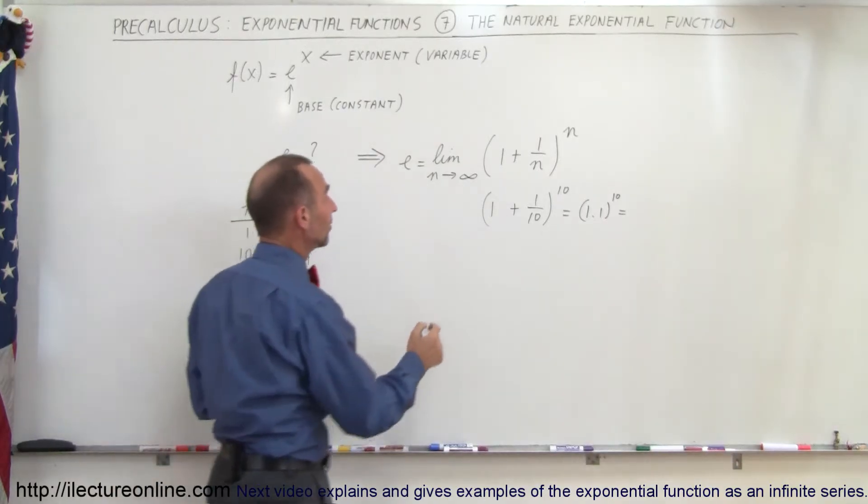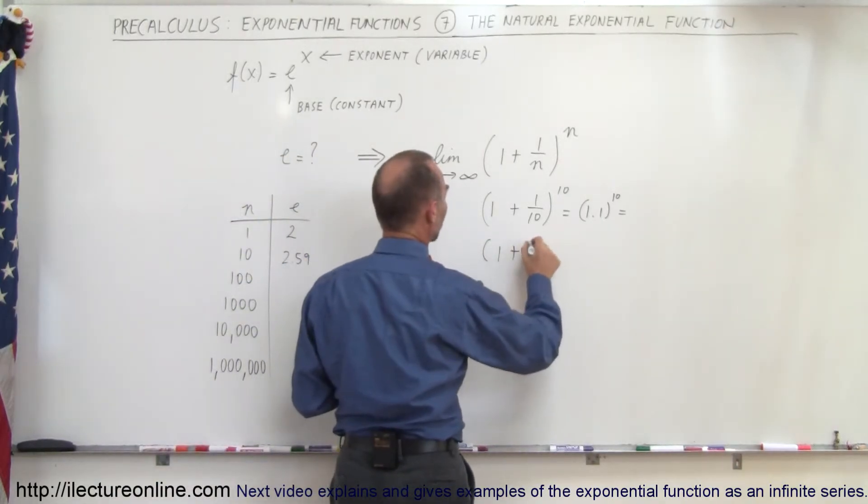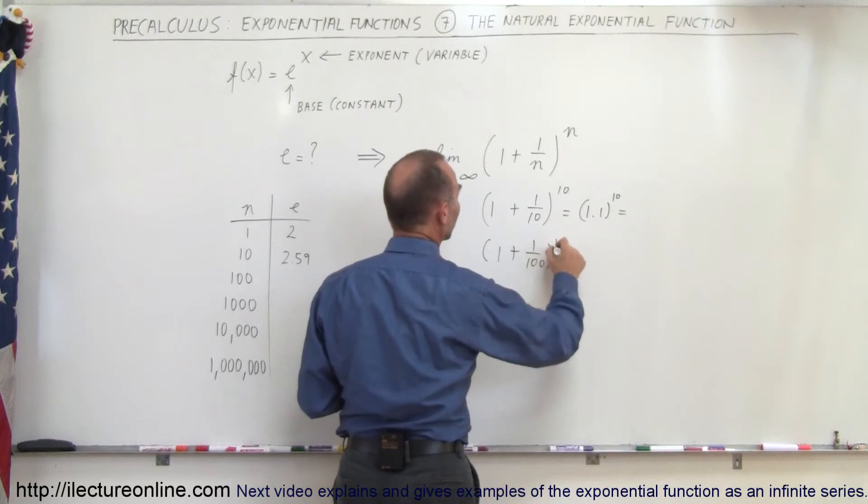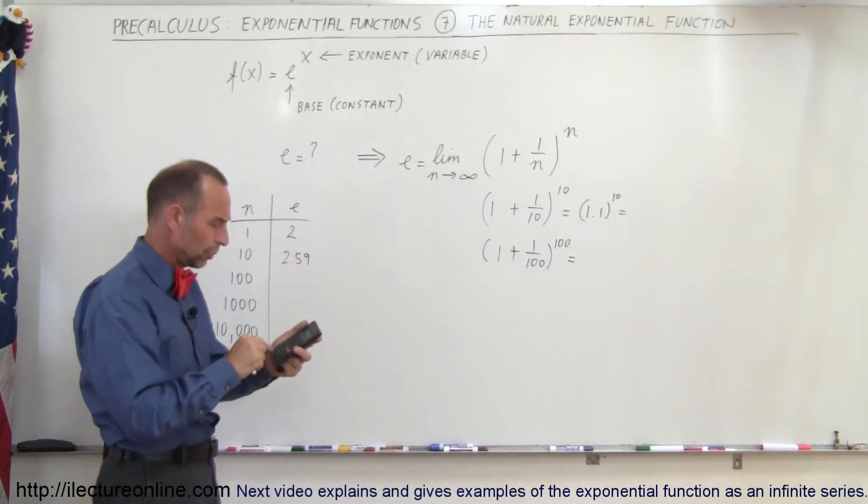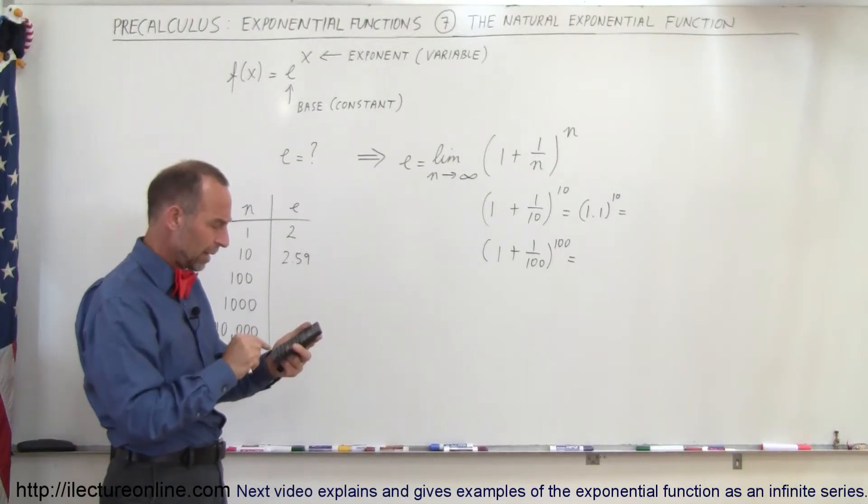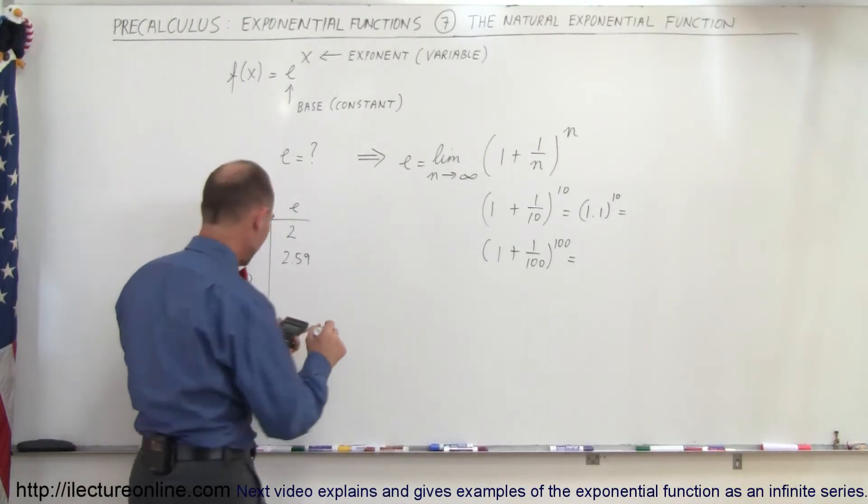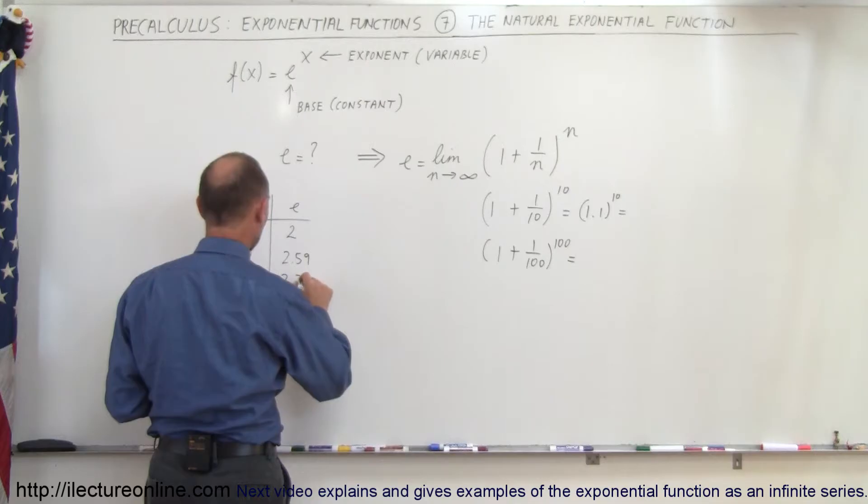Continuing, let's say that we have 1 plus 1 over 100 raised to the 100 power. That would be 1.01 raised to 100 power. 1.01 raised to the 100 power, and we get 2.70.